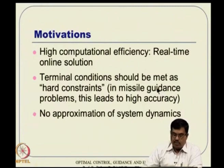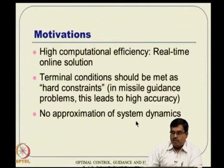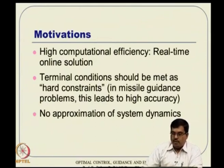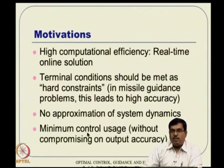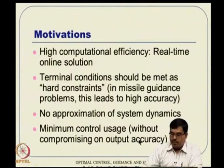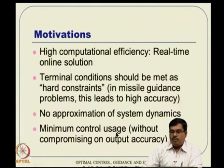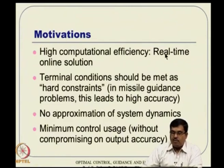The next motivation is no approximation of system dynamics. In adaptive techniques and similar methods, we do not want to linearize or quasi-linearize the system dynamics to arrive at some closed-form or semi-closed-form solution — we have actually started with linearizing, which we do not want. Additionally, minimum control usage is also our objective, without compromising output accuracy at the final time. What we want is a path from a given initial condition that uses minimum control and leads to extremely high accuracy, with a computationally efficient real-time online solution.